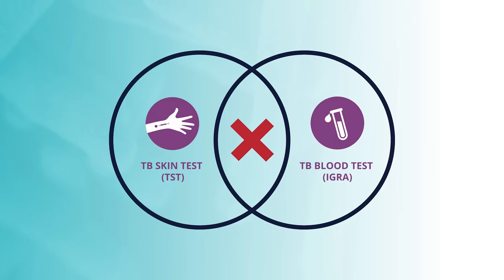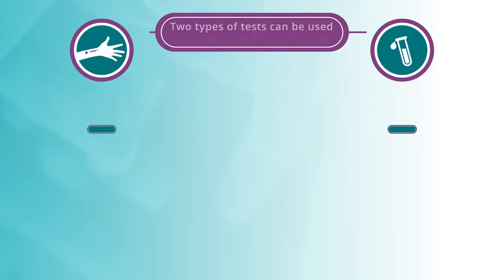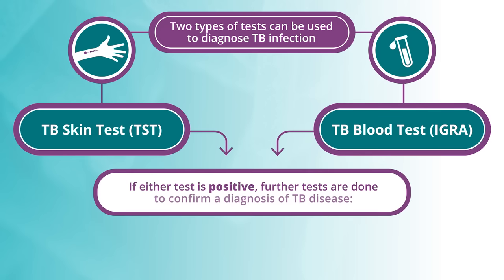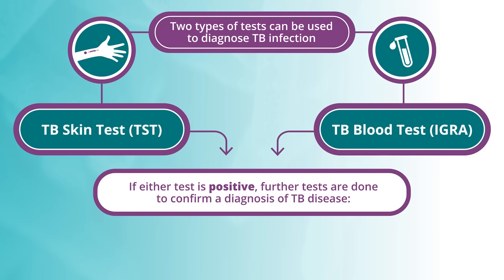Generally, it is not recommended to test a person with both a TB skin test and a TB blood test. Healthcare providers are encouraged to use TB blood tests to screen for TB infection whenever possible. A positive TB skin test or TB blood test only tells that a person has been infected with TB bacteria. It does not tell whether the person has LTBI or has progressed to TB disease. Other tests, such as a chest X-ray and a sample of sputum, are needed to see whether the person has TB disease.